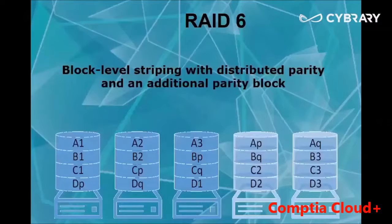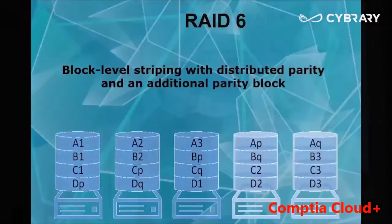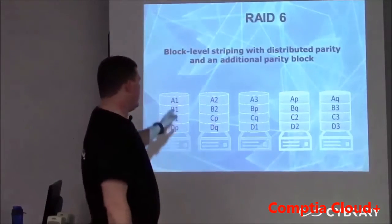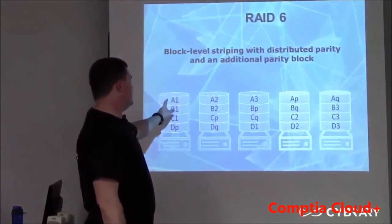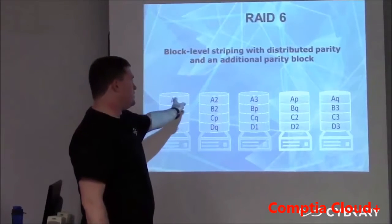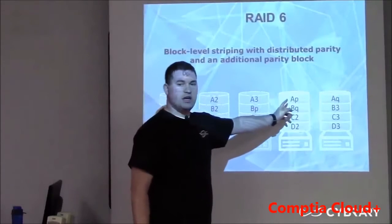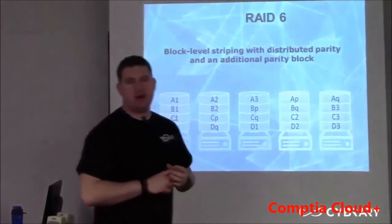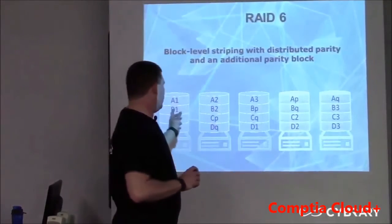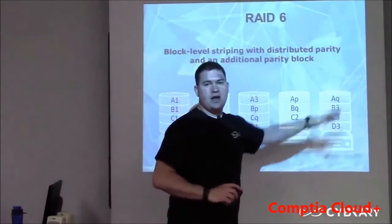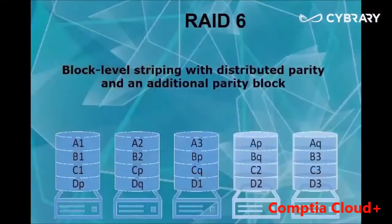RAID 6 is the same as RAID 5 but it has two parity drives, so you're using two hard drives for parity. For instance, you have sections A1, A2, A3 but also two additional parities; same for B1, B2 with two parities and B3 at the other end. RAID 6 allows you to lose two hard drives and still be able to continue normal operation.